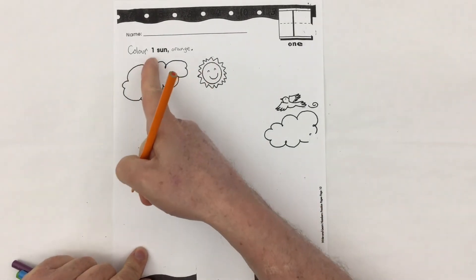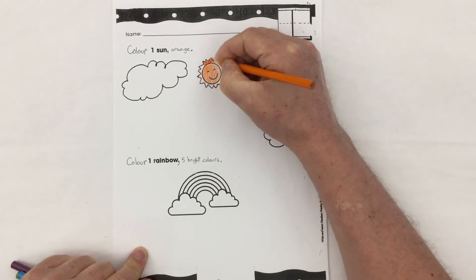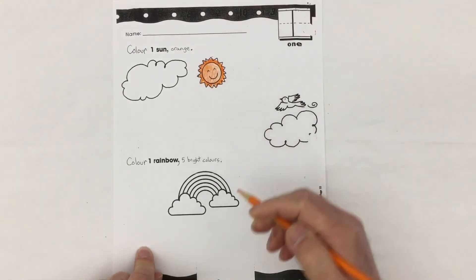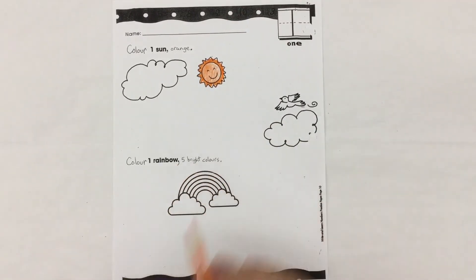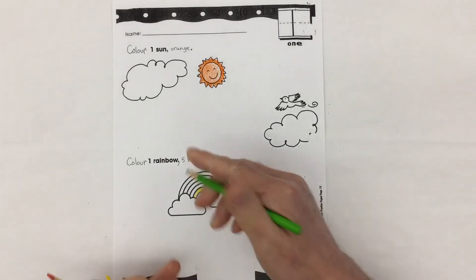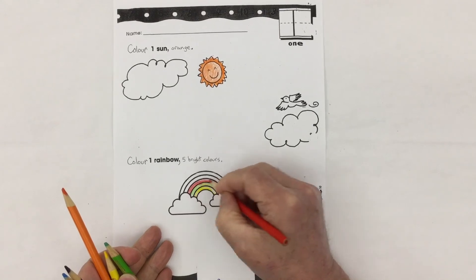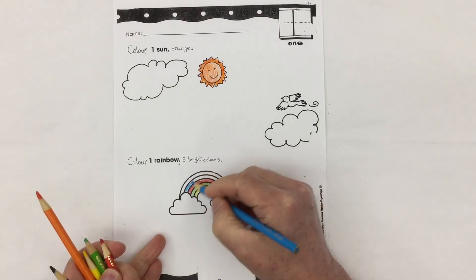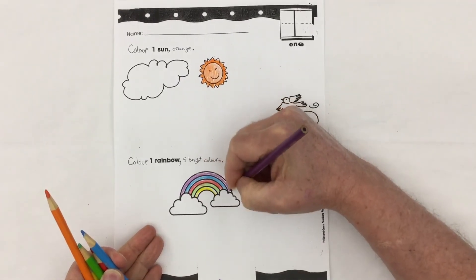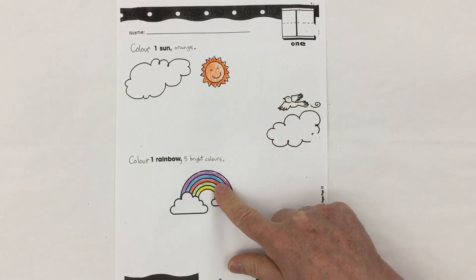Page two says color one sun orange, and it says color one rainbow five bright colors. One sun, one rainbow.